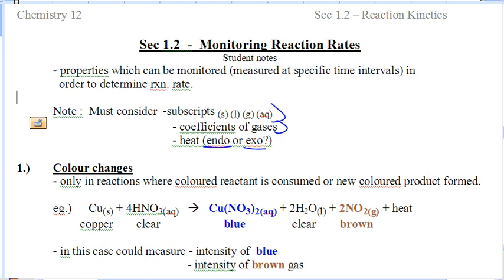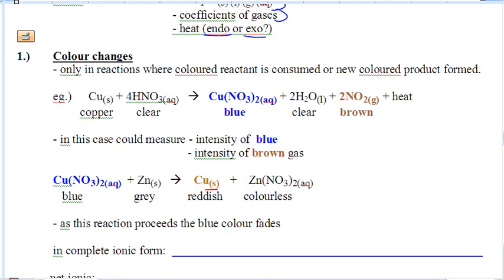So the very first change in amount that we can monitor is color. Very cut and dry. You can only monitor color when color is given to you. For example, this is copper and clear, and it's turning into something that's blue, clear, and brown. You can't make up your own colors. If the color is changing, you can monitor change in color.